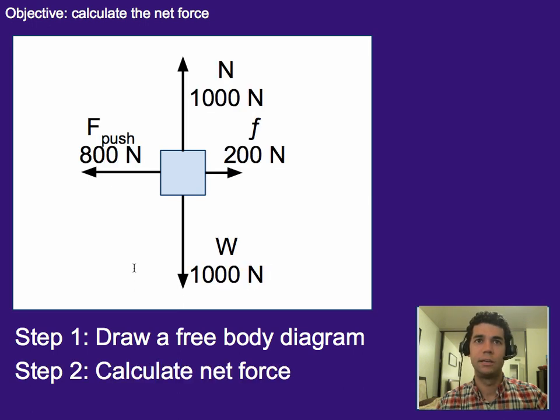Alright now let's put in our values. So we know that the push was 800 newtons. We know that the, oh forgot the friction there. We know that the normal force was 1000 newtons and weight was 1000 newtons. And then the last arrow that I just added in was the frictional force going back to the right.